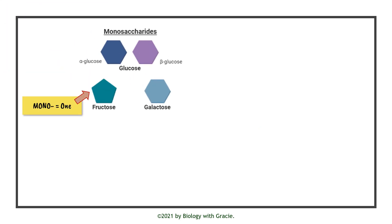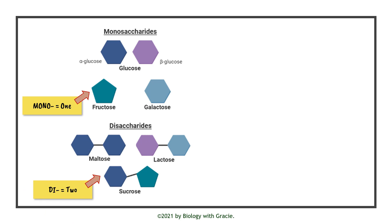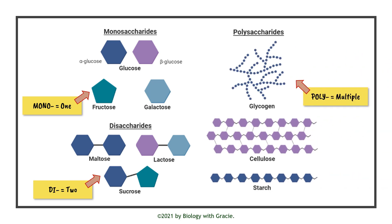Here we have our monosaccharides represented as specific shapes and colours. Mono means one, hence monosaccharides are single sugar molecules. Di means two, hence disaccharides are two molecules linked together — maltose has two alpha glucose molecules, lactose has beta glucose and galactose, and sucrose has alpha glucose and fructose. Poly means multiple, hence polysaccharides are made up of multiple monosaccharides or disaccharides. So glycogen is made up of alpha glucose, cellulose of beta glucose, and starch of alpha glucose.